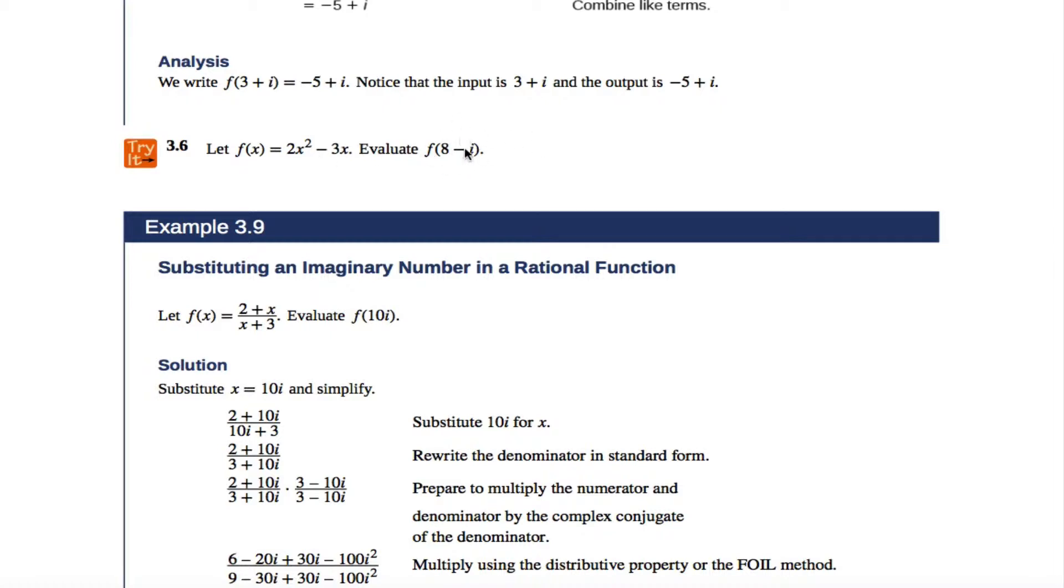All right, this is a number, 8 - i, so we could put it into this function. We could say, well, I have this blueprint for what comes out of the machine when I put x into it, so if I want to figure out what is f(8 - i),